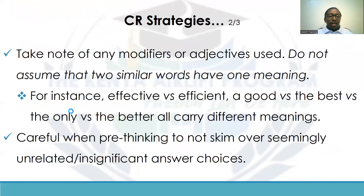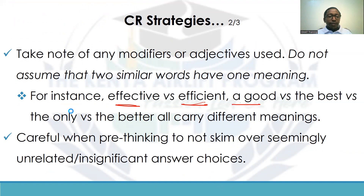Always take note of any modifiers or adjectives used. Do not assume that two similar words have one meaning. For example, 'effective' and 'efficient' — do not use one if the author says the other. Similarly, 'a good solution,' 'the best solution,' 'the only solution,' or 'the better solution' all carry different meanings. Make sure that if your passage says A is a good solution, you do not assume it says A is the better or best solution. Always look out for the exact wording of the author.